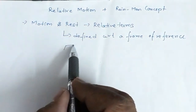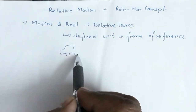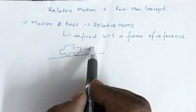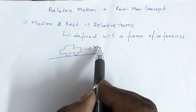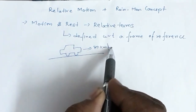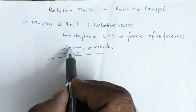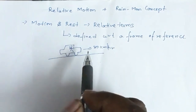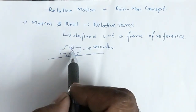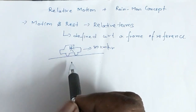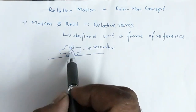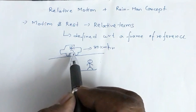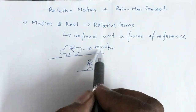Suppose there is a car going in this direction with a velocity of 80 km per hour, and a person is inside the car. The velocity of this person with respect to the car is zero. Suppose another person is on the ground — the velocity of this person with respect to the ground will be 80 km per hour.